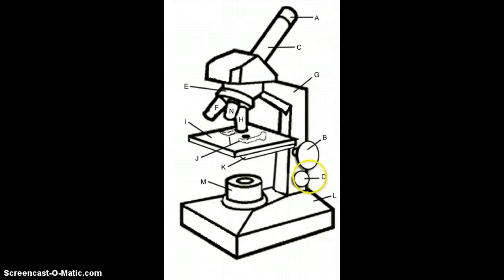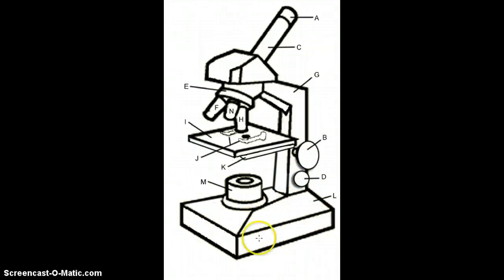D is pointing to the fine adjustment knob. L is pointing to the base, so this is the base.